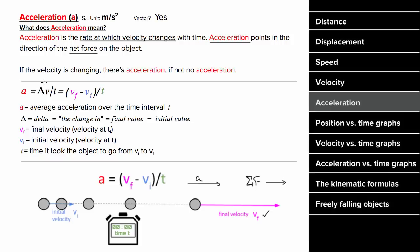The formula for acceleration is the change in velocity over the time it took for that velocity to change. Since delta means final minus initial, you can write this as final velocity minus initial velocity over the time. The units of acceleration are meters per second squared, since acceleration tells you how many meters per second the velocity is changing per second. Acceleration is a vector, which means it can be negative if the acceleration points left or down.